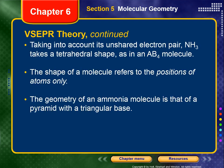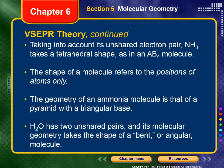If we take into account its unshared pair, NH3 takes a tetrahedral shape just like an AB4 molecule. Now we're getting tricky. NH3 looks like an AB3 format but really acts like an AB4 format, so let's distinguish between shape and geometry.